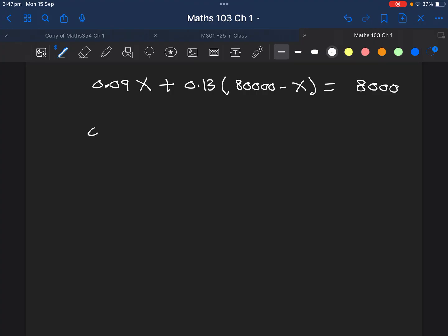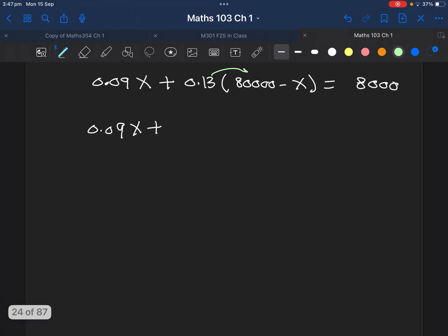Next step, we need to distribute the 0.13. Just multiply 0.13 by 80,000 - use your calculator, the answer will be 10,400. If we multiply 0.13 with minus X, it will be negative 0.13X. And the other side is just 8,000.